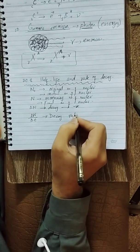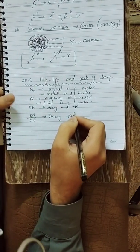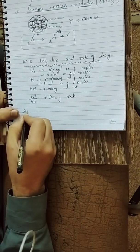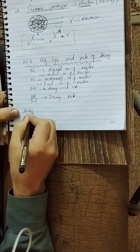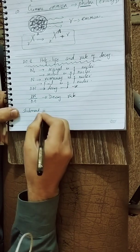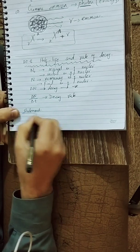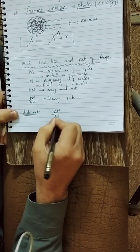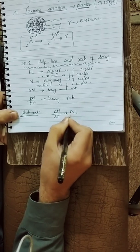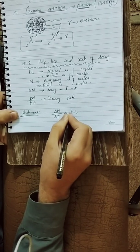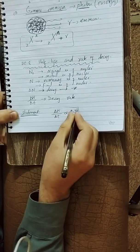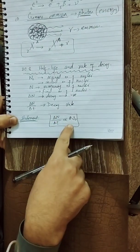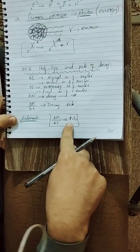ΔN/Δt is called the decay rate, or decay per second. The statement of the radioactive decay law is: the decay rate is directly proportional to N₀. This means if N₀, the initial number of nuclei, is greater, the decay rate will be higher.